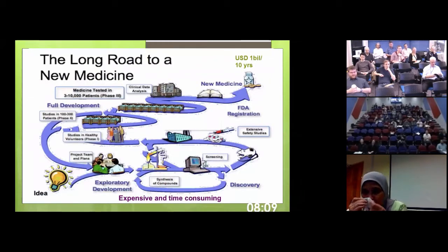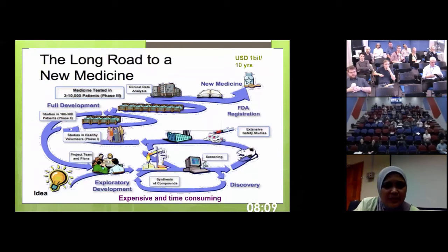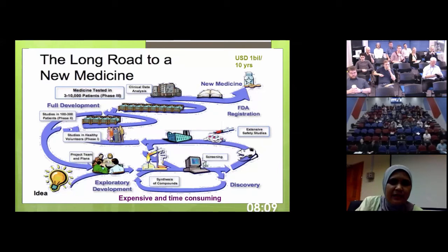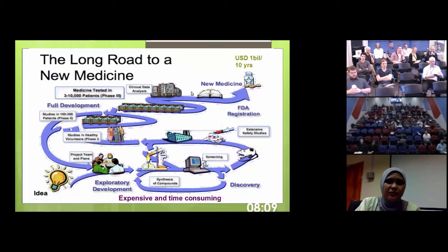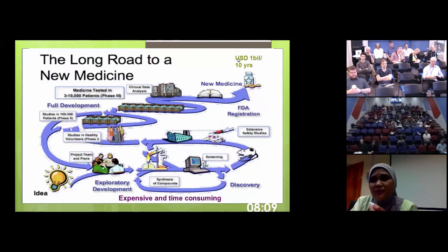Making drugs is actually very resource and time consuming. There are a lot of phases and processes you have to undertake, from ideation through screening, exploratory studies, optimization of compounds, studies on healthy volunteers in phase one clinical trials, then introducing it to patients. Registration also takes a lot of time. At the end, you probably spend around US$1 billion and it takes around 10 years to make a new drug.